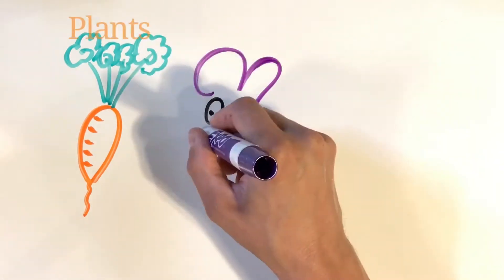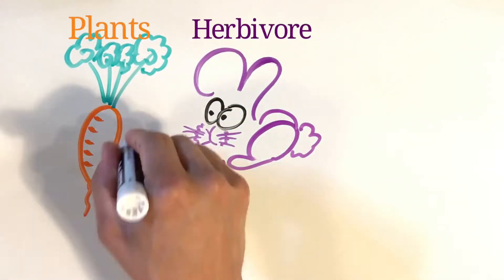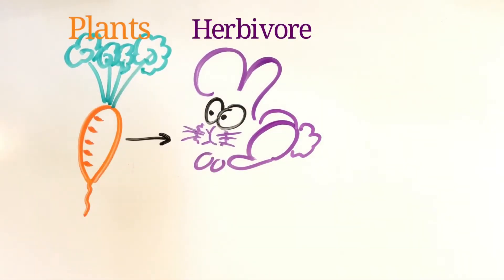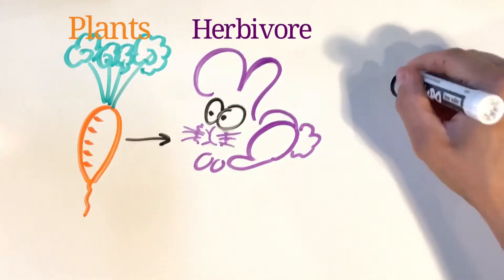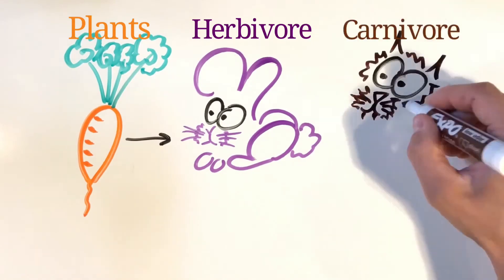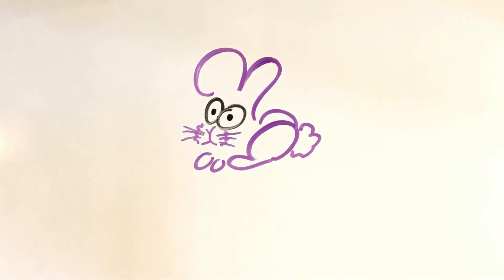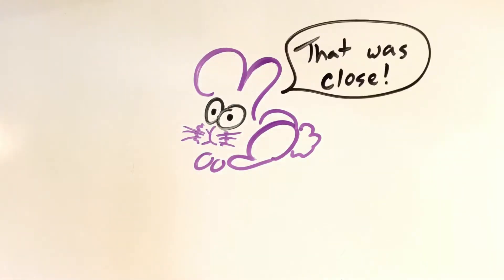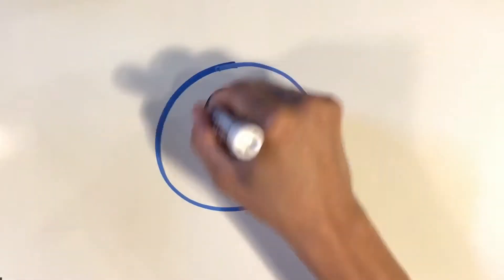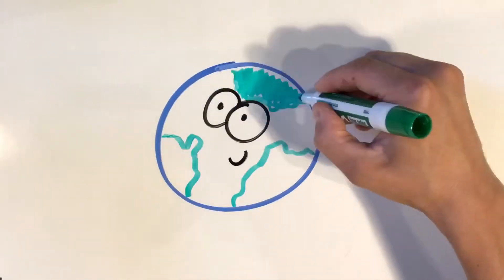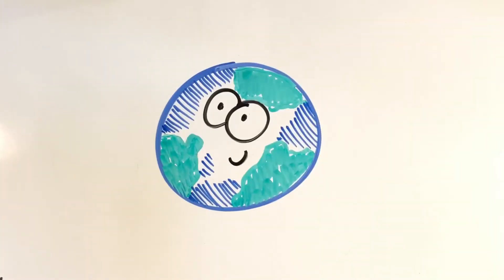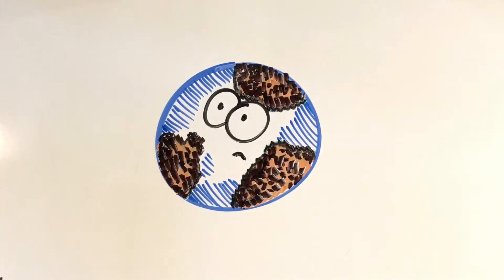All animals' source of food is plants. An herbivore eats plants directly, while a carnivore eats the herbivores that eat the plants. What we're really talking about here is the concept of food webs and food chains, which are really beyond the scope of this video. In any event, without plants, there would be no food, and there would certainly be no life on Earth.